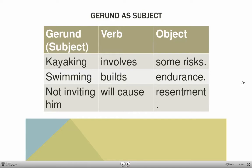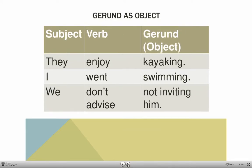Here we have sentences where the gerund is a subject: 'Kayaking involves some risks,' 'Swimming builds endurance,' 'Not inviting him will cause resentment.' It can also be the object: 'They enjoy kayaking,' 'I went swimming,' 'We don't advise not inviting him.'